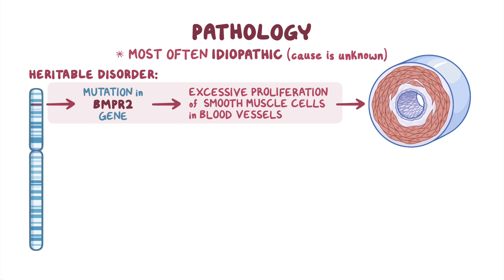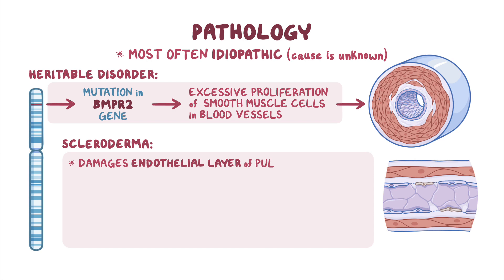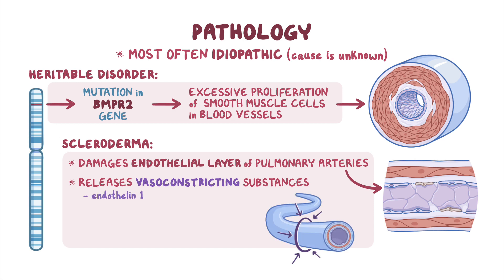Another cause of PAH is connective tissue disorders like scleroderma, which damage the endothelial layer of the pulmonary arteries, leading to a release of vasoconstricting substances causing tightness and narrowing of the blood vessels, such as endothelin-1, thromboxane, and serotonin, as well as smooth muscle hypertrophy, or enlargement.